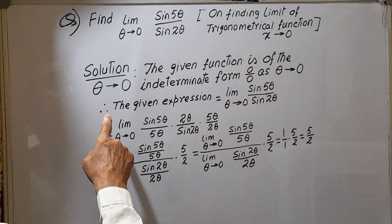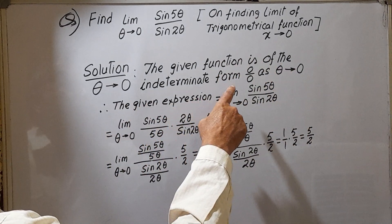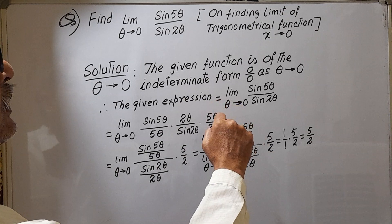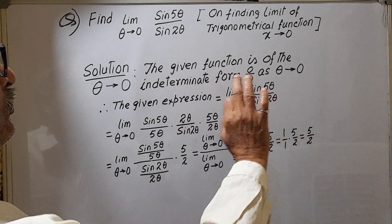Now the given expression equal to limit theta tends to 0, sin 5 theta by sin 2 theta. This is the question.